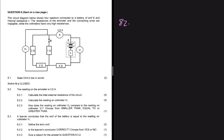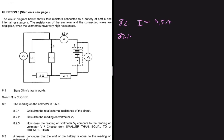In problem 8.2, we are told that the reading on the ammeter is 3.5 amps, so we have I equal to 3.5 amps. Question 8.2.1 asks us to calculate the total external resistance of the circuit. Let's go to our diagram and do some analysis to see what's happening.